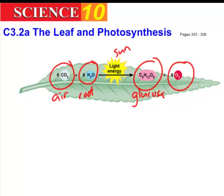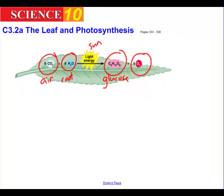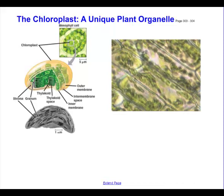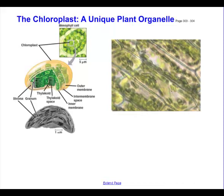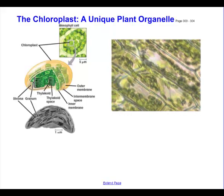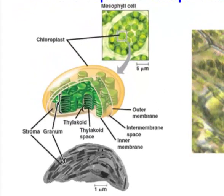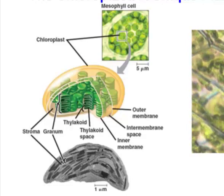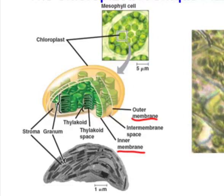called a chloroplast. If you look inside a chloroplast with a high-powered microscope, you will see that it consists of two membranes: an outer membrane and an inner membrane.